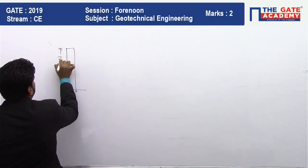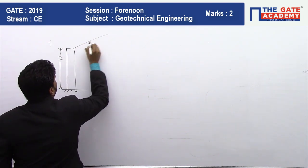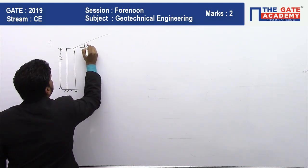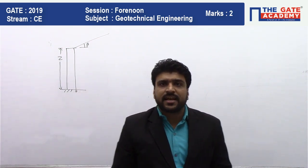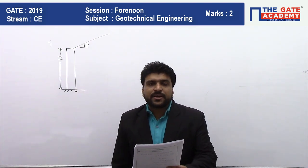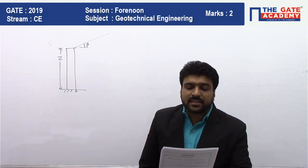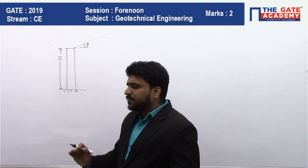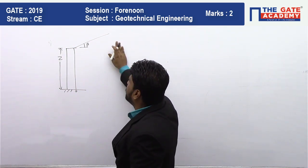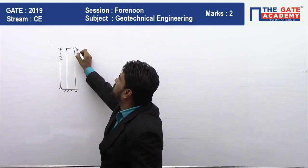And this is the inclined surcharge of beta angle. Now the first statement given is: the active earth pressure will act at h by 3 from the base at phi angle with the horizontal. We know, if I take the simple calculation without taking this beta angle.